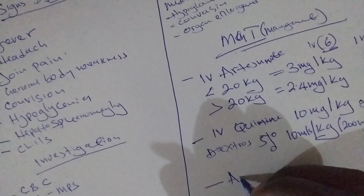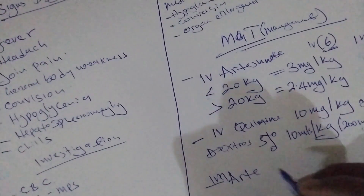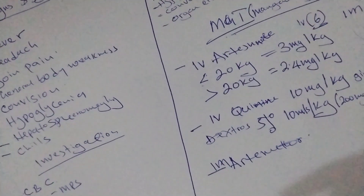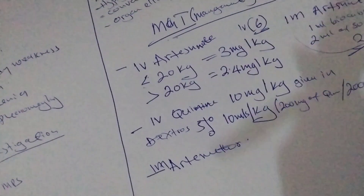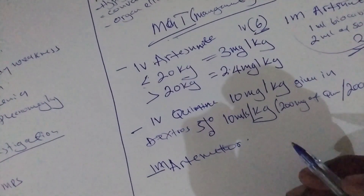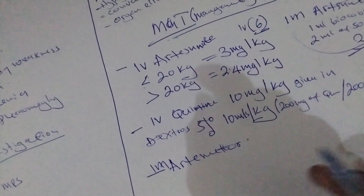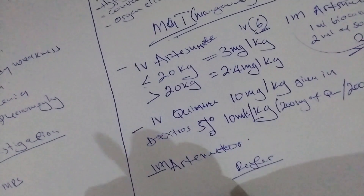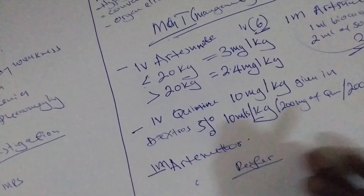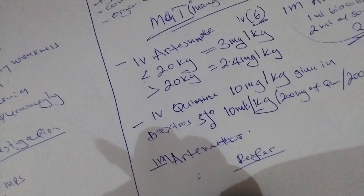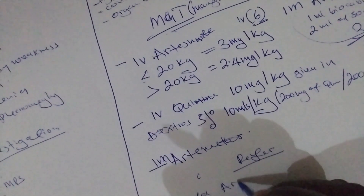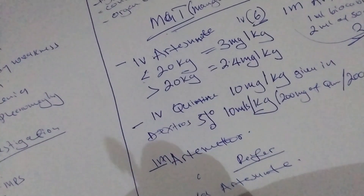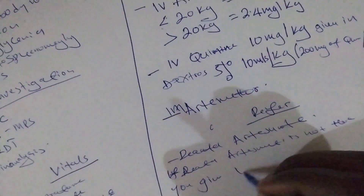If you don't have IV quinine, you can also give the alternative which is IM artemether. Now if you are in a lower facility like a health center where you don't have advanced care for the patient, you are going to refer this patient. The pre-referral treatment is rectal artesunate. If rectal artesunate is not available, you give IV quinine and then refer the patient.